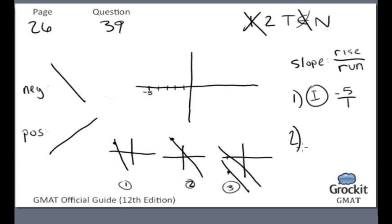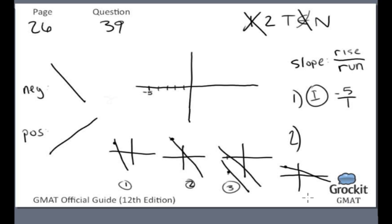Statement 2 tells us that r is greater than 0, which is helpful — it absolutely needs to be greater than 0 for us to have a positive x-intercept. But being greater than 0 isn't enough. For example, the line could still be steep enough that it never crosses the x-axis on the positive side. Without knowing the slope of the line, it's still not enough. Statement 2 on its own is also insufficient. Now we have to evaluate the two statements in conjunction.